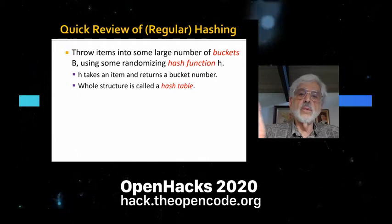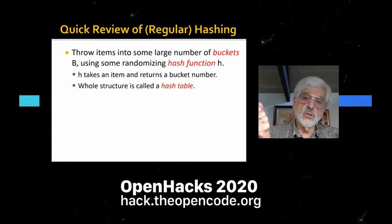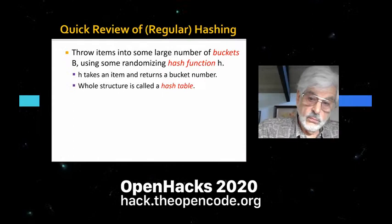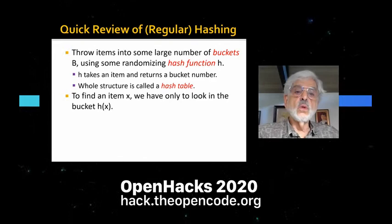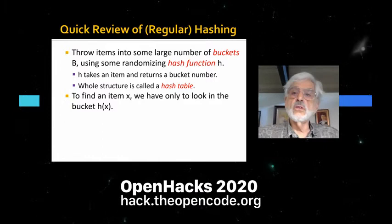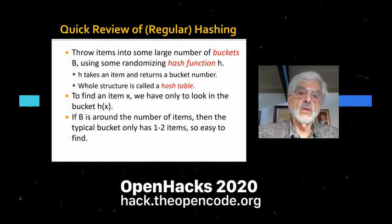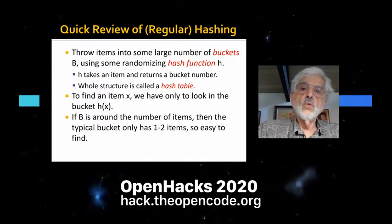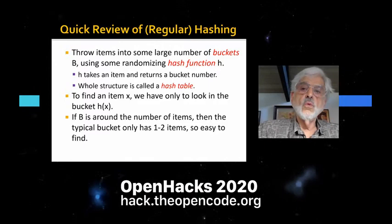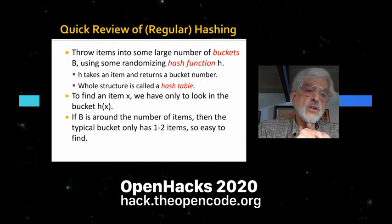If we want to find an item or know which bucket to put an item in, we compute h(x) — the hash function — and that gives us a bucket number, and once you have the bucket number you just look in that bucket. If the hash function really randomizes things and the number of buckets is on the order of the number of different items, then a typical bucket will only have maybe one or two items, so it's easy to find them. You might use a linked list for each bucket, but the lists are of length one or two — some very small number.